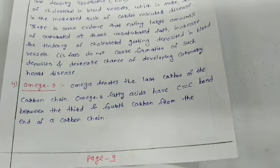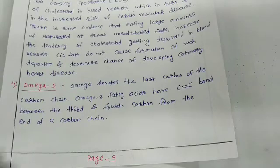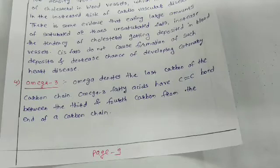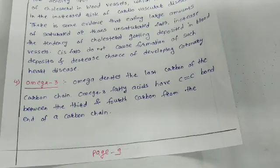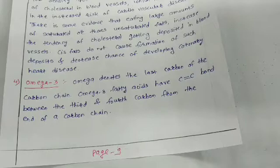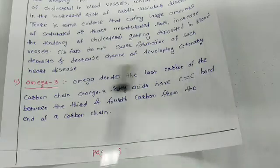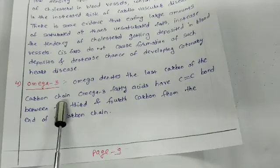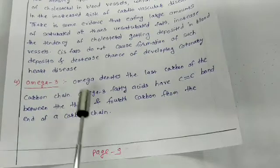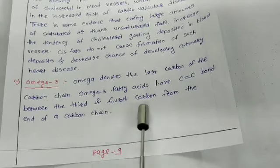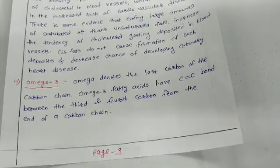Fourth point, that is omega-3. Two types of fatty acids, omega fatty acids, we have to study here. First one is omega-3 fatty acid and the second one is omega-6 fatty acid. Remember students, omega-3 fatty acid is good for health while omega-6 fatty acid is bad for health. Omega denotes the last carbon of the carbon chain. Omega-3 fatty acids have carbon-carbon double bonds between the third and fourth carbon from the end of a carbon chain.